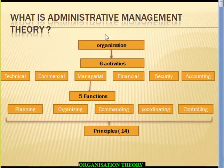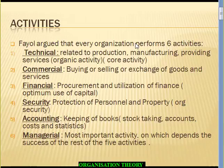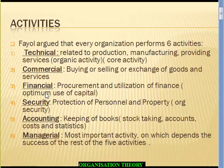Every organization has six main activities. The first is technical — the core or organic activity related to what the organization actually does: production, manufacturing, or providing services. Second is commercial, involving buying, selling, or exchange of goods and services. Third is financial, which includes utilization, procurement, and decision-making about finance, since finance is the lifeblood of business. Fourth is security, involving protection of personnel and property. Fifth is accounting — bookkeeping, stock taking, cost, statistics, etc. Sixth is managerial, the most important activity according to Fayol, consisting of five functions.